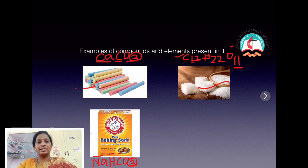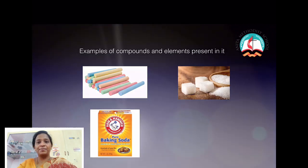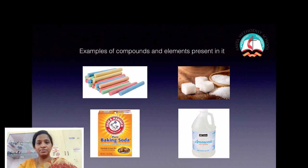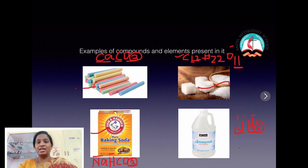The next example is ammonia. Ammonia is a compound in which nitrogen and hydrogen combine in a ratio of one is to three — one atom of nitrogen and three atoms of hydrogen — to form a compound called ammonia. These are a few compounds which we use in our daily life.